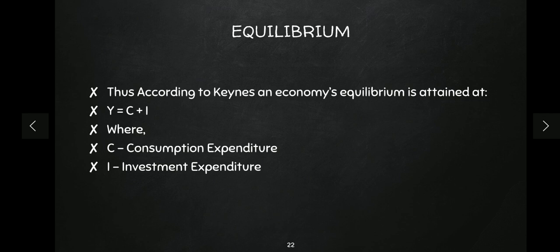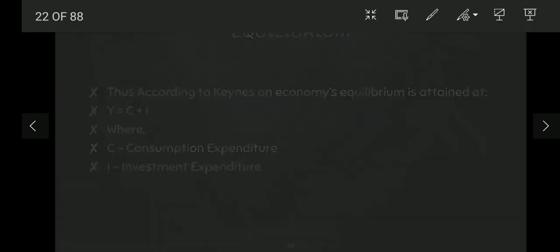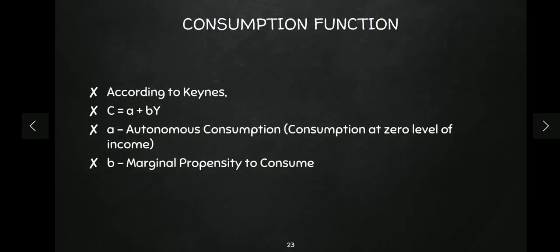Equilibrium is attained where aggregate supply equals aggregate demand. Aggregate supply is output denoted by Y, and aggregate demand is consumption plus investment, so Y = C + I — that is where our equilibrium is attained. Now in this video we are going to cover the topic of consumption. Let's start. According to Keynes, consumption is denoted as a + bY.